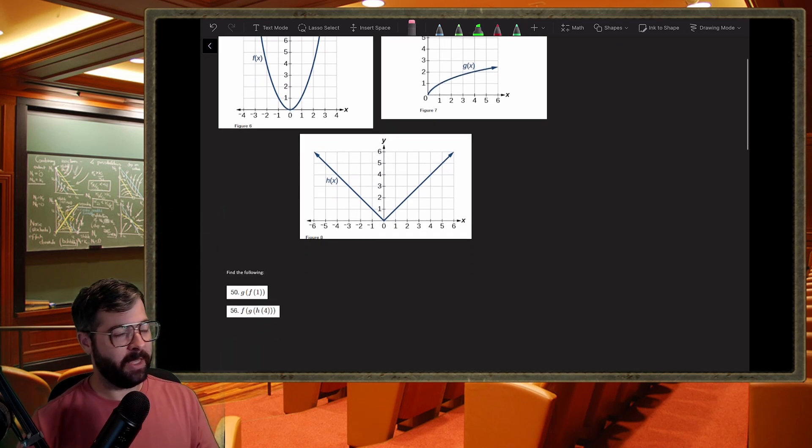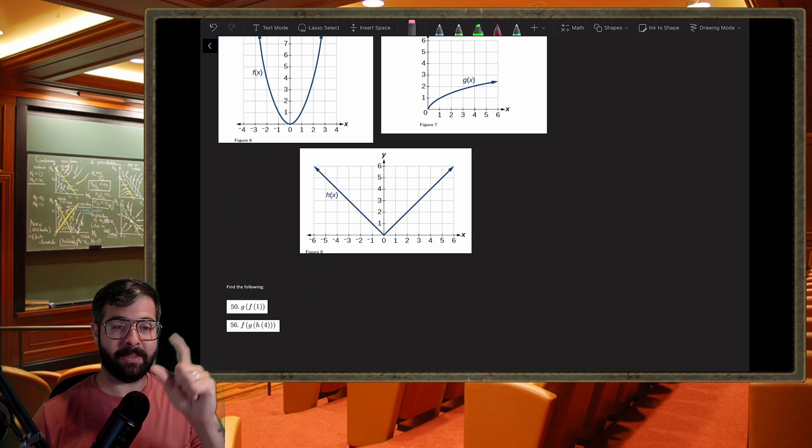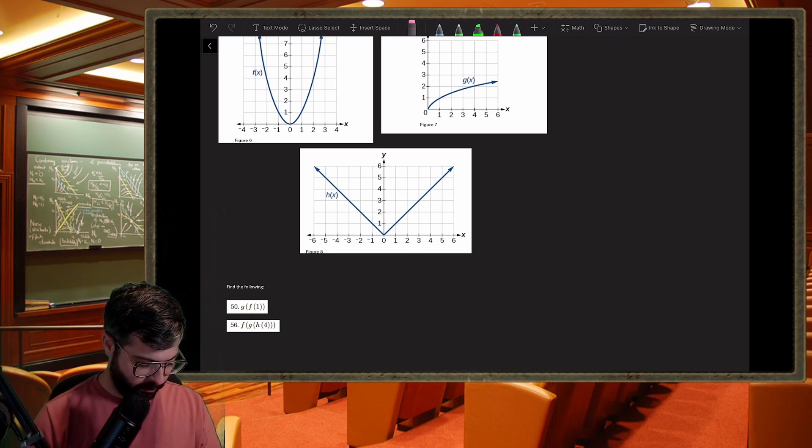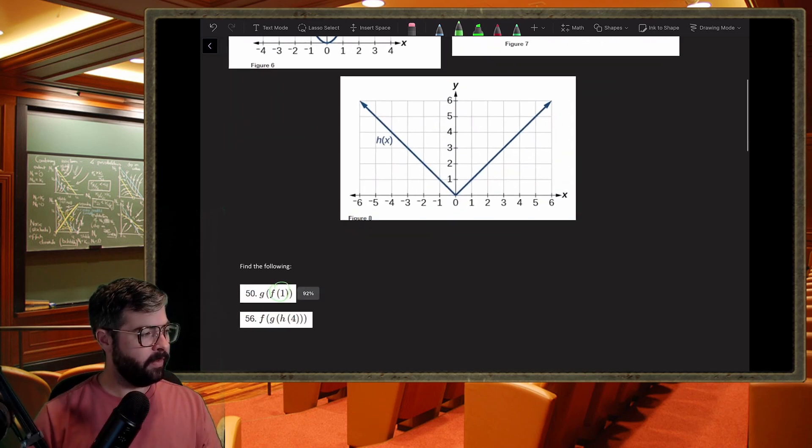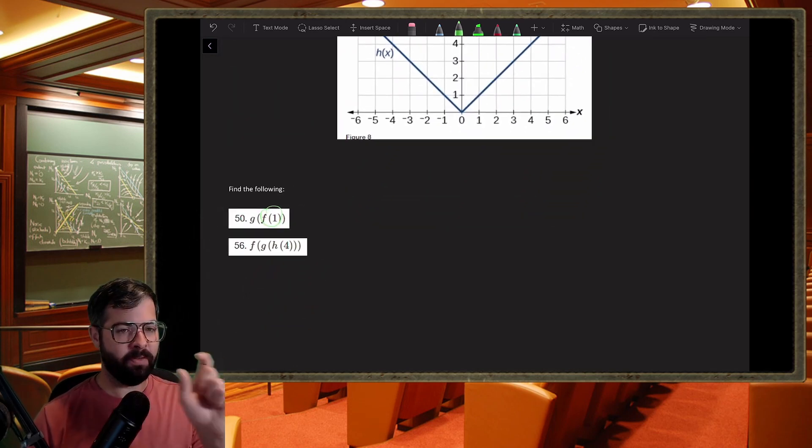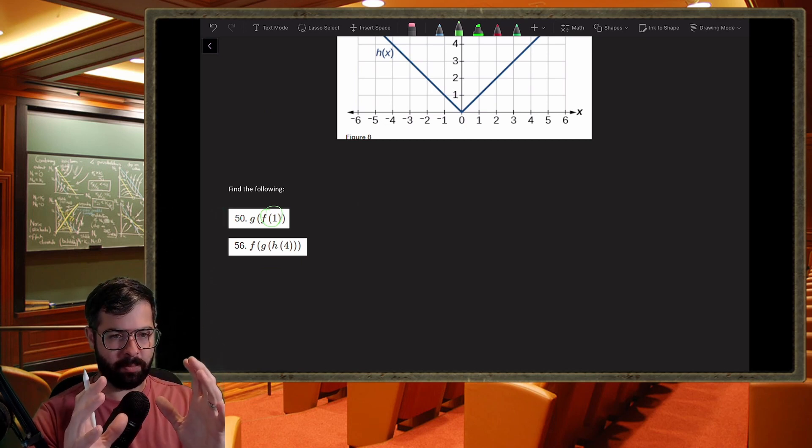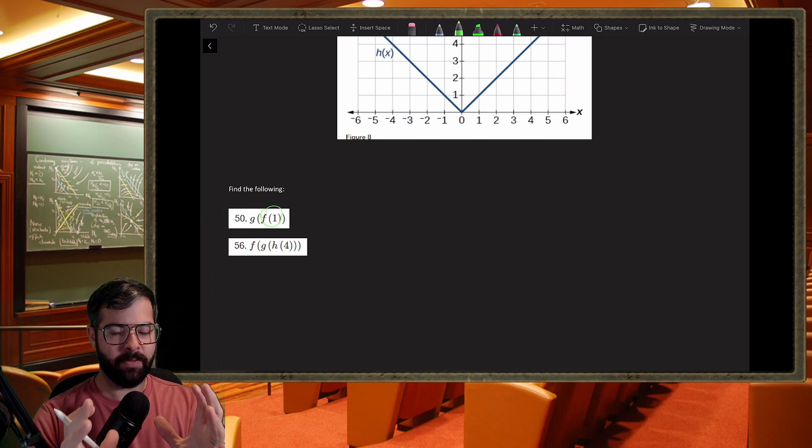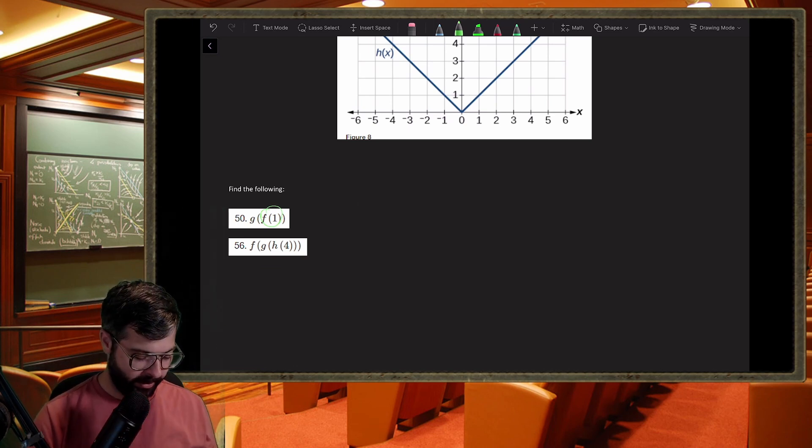Now we can also attack it from the graphical perspective. We might just be given the graphs of these functions. What's g of f of one? So meaning go from the inside out, meaning take the output of f of one and feed it to g, because whatever is inside that function bracket notation means this function eats this thing and then gets the output.